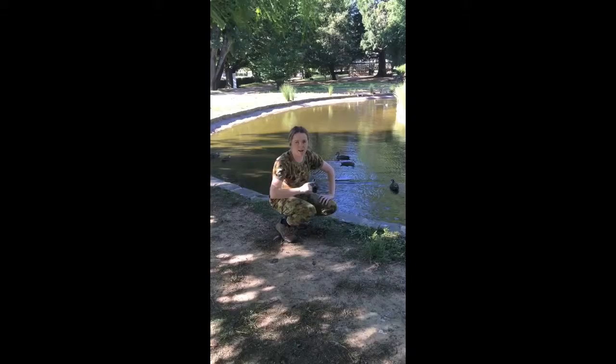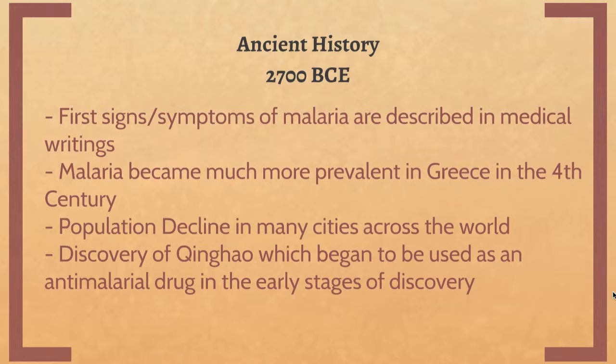History of Malaria. The first signs and symptoms of malaria were described in medical writings in 2700 BCE, and became more prevalent in Greece in the 4th century. This caused a globally recognised population decline in many cities.